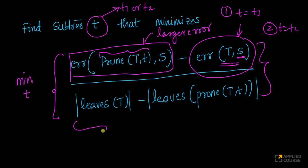Next, in the denominator, look at this. The number of leaves that you have in tree t is larger than the number of leaves that you have in the tree that you obtain after pruning t.